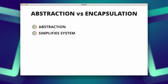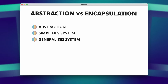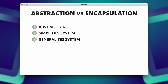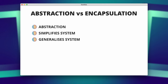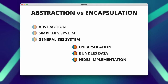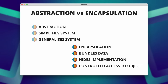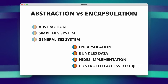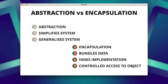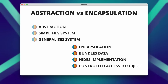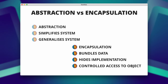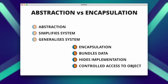In summary, abstraction is about simplifying and generalizing complex systems by focusing on relevant aspects, while encapsulation is about bundling data and methods together, hiding the internal implementation, and providing controlled access to the object state. Both concepts are important for creating well-structured, modular, and maintainable software systems.